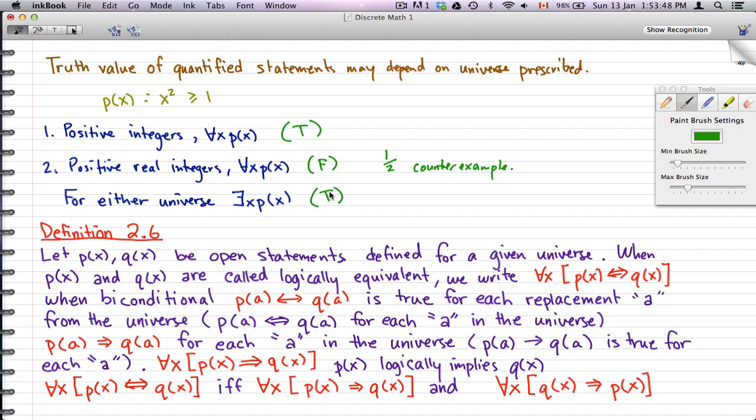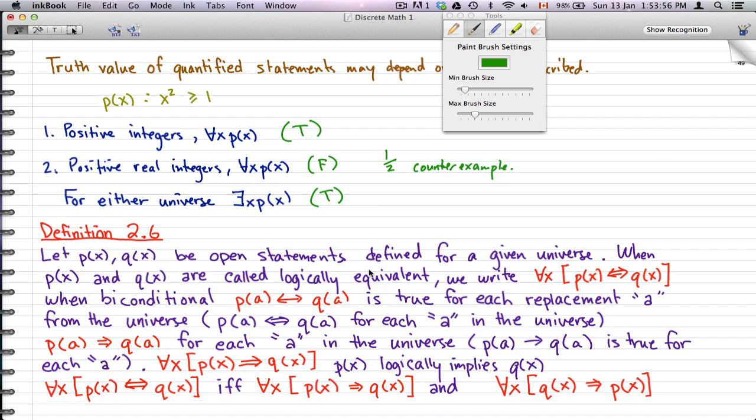Now I just want to go through this last definition before we stop this video. So let Px, Qx be open statements defined by a given universe. When Px and Qx are called logically equivalent, this is what we write: for all x, Px biconditional Qx, and we have these double arrows with equal sign in between or I just call these bolded double arrows. But you can call them whatever you want. Just remember that when they're called logically equivalent, you write the logical equivalents like this. And when biconditional Pa, Qa is true for each replacement of a from the universe, then we have a logical equivalence here. Pa is logical equivalent to Qa.